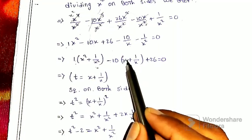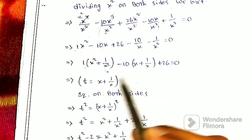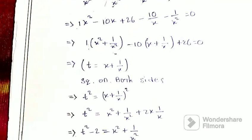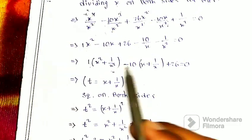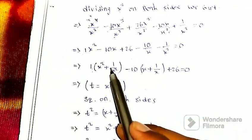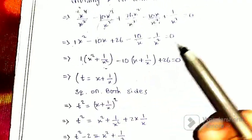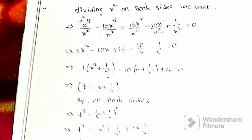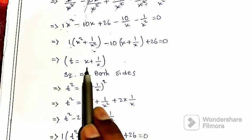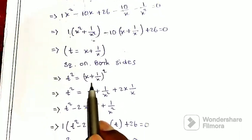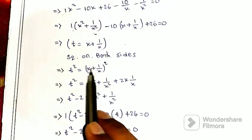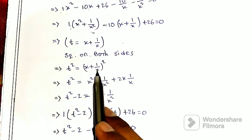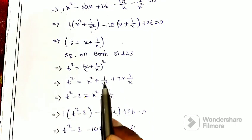Now let t equal x plus 1 by x. So t squared equals (x plus 1/x) whole squared. Using the identity (a+b)² = a² + b² + 2ab, we get t² = x² + 1/x² + 2.